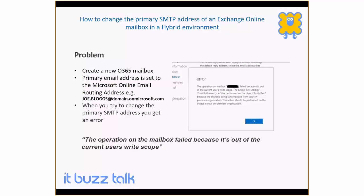When you assign your Office 365 license and a mailbox is created, you might find that the primary email address is set to the Microsoft Online Email Routing Address — the @domain.onmicrosoft.com address. And when you try to change that SMTP address, you get an error saying the operation on the mailbox failed because it's out of the current user's right scope.